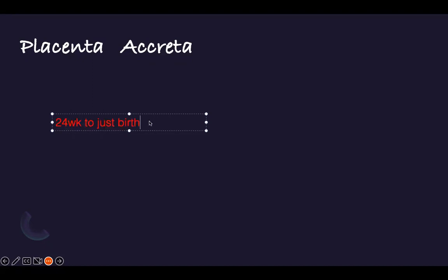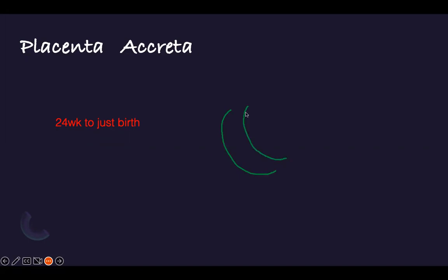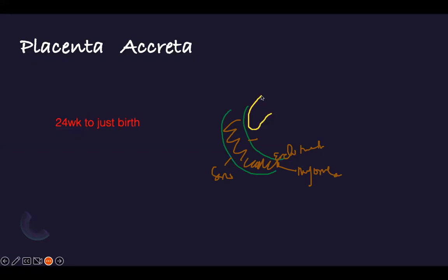One of the key ones is placenta accreta. So this is the placenta. Usually you have the endometrium of the uterus — it has layers. This is the muscle layer, the myometrium. The inside lining is the endometrium. And this is the serosa on the outside. The placenta normally doesn't completely embed into the muscle — it comes here with vessels supplying it. This is normal placenta.